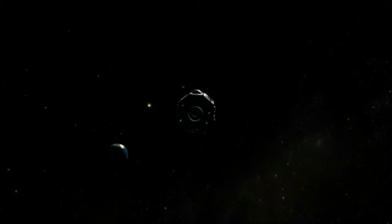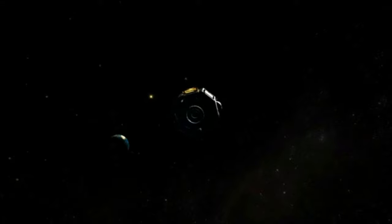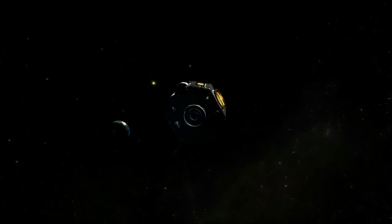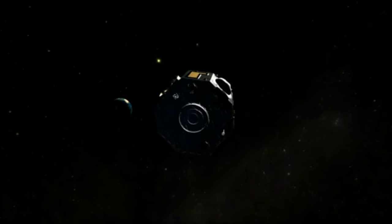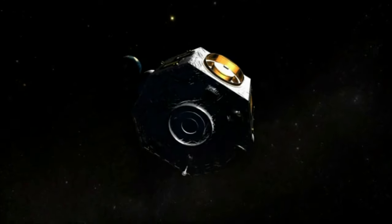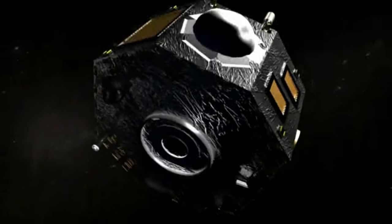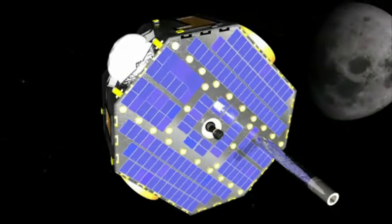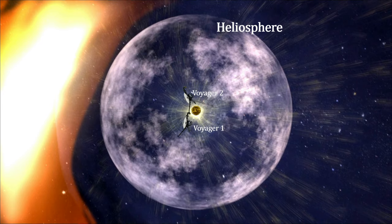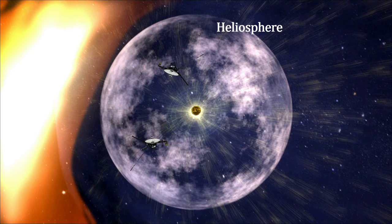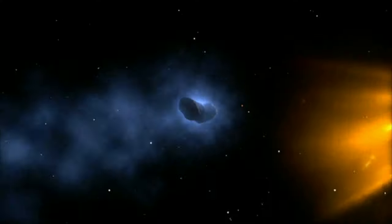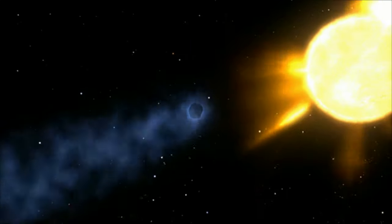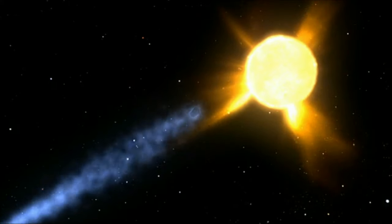Five spacecraft have returned much of the data about its furthest reaches, including Pioneer 10 (1972 to 1997, data to 67 astronomical units), Pioneer 11 (1973 to 1995, 44 astronomical units), Voyager 1 and Voyager 2 (launched 1977, ongoing), and New Horizons (launched 2006).